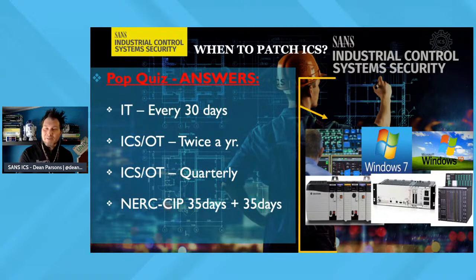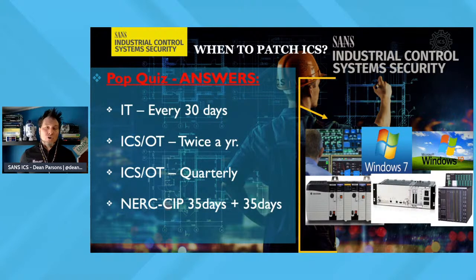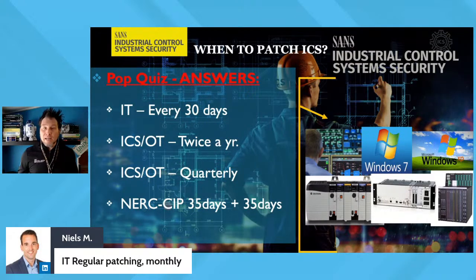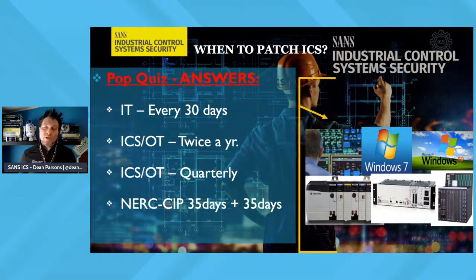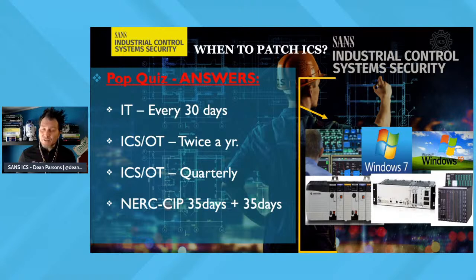Pop quiz answers: IT is patched every 30 days like clockwork; in ICS we see generally twice a year, and increasingly quarterly now, which is really good. We are getting better at patching industrial control systems. For NERC CIP compliance specifically, at least once every 35 calendar days you must evaluate security patches for applicability, and within 35 days after that complete the evaluation and take action — either applying the patch, creating a mitigation plan, or revising an existing mitigation plan.